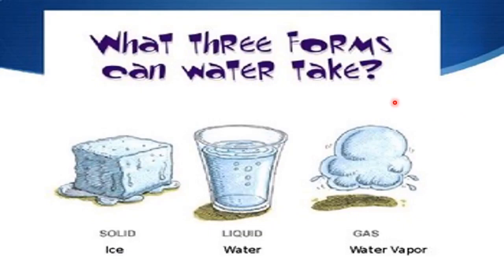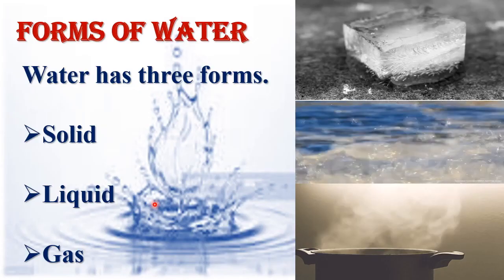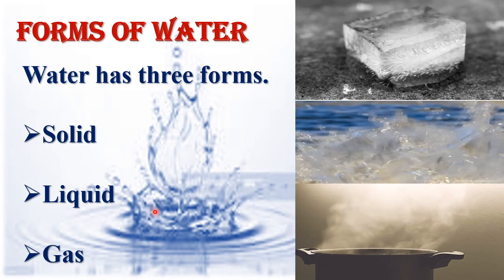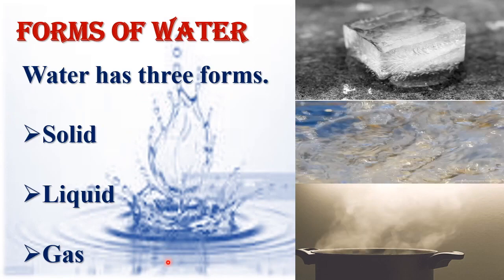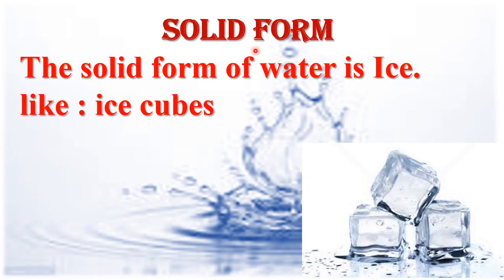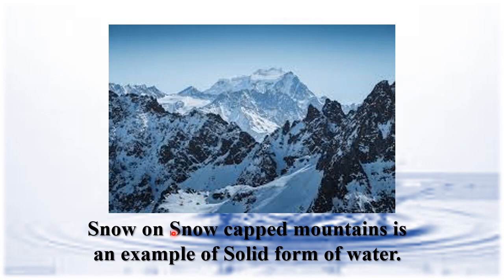Now let's learn about the different forms of water. Water has three forms: solid, liquid, and gas. The solid form of water is ice, like ice cubes. Snow on snow-capped mountains is an example of the solid form of water.